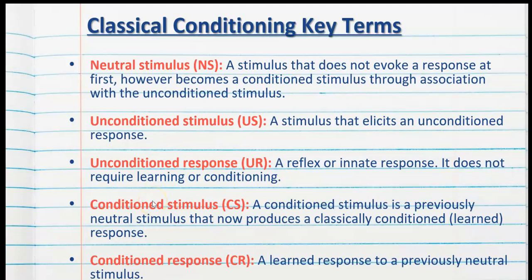Once the association has been made between two or more stimuli, we look at the conditioned stimulus and conditioned response. The conditioned stimulus is a previously neutral stimulus that now produces a classically conditioned or learnt response — the NS and the CS are always the same. This new learnt response is the conditioned response or CR — a learnt response to a previously neutral stimulus, now caused by the CS.